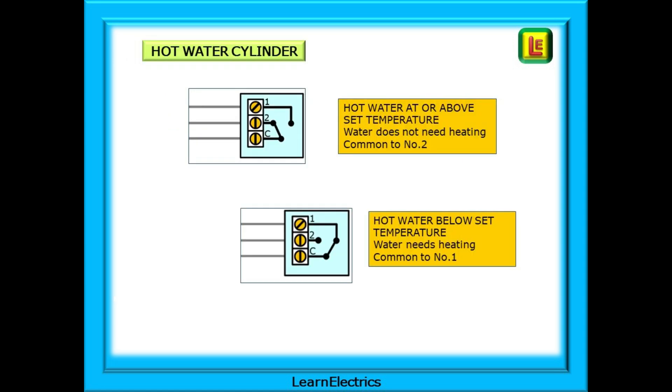The thermostat in the hot water cylinder works in a different way. It has three terminals and all three terminals are needed. When the hot water is up to temperature, the C or common terminal and 2 are closed. If the water temperature is below the set value, the switch changes position and the common is connected to terminal 1. Up to temperature, C and 2 connected. Below set temperature, C and 1 connected.